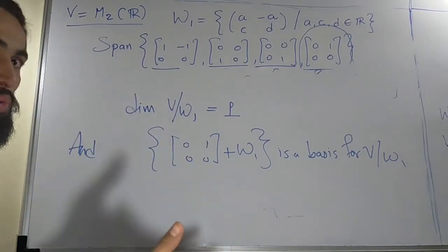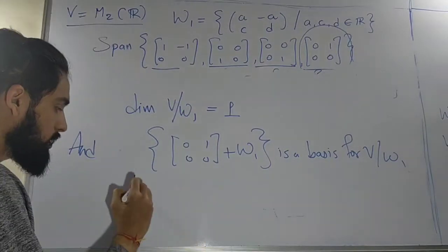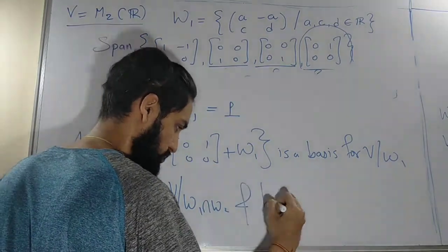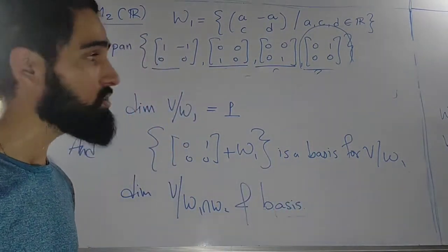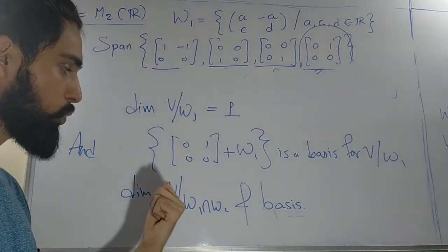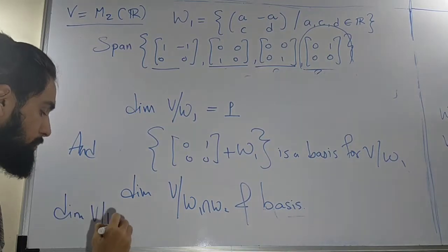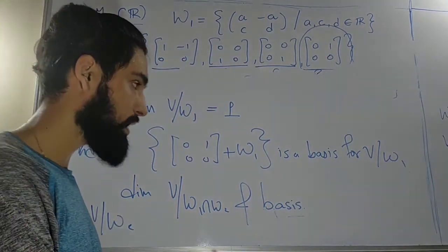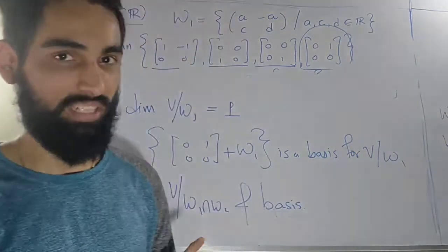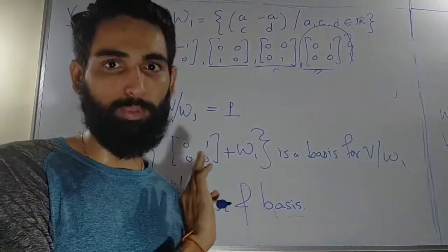This same approach works for W2 as well. I request students to find out the dimension and basis of V/W2, and also the dimension of V/(W1 ∩ W2) as an exercise. I want to do one more example, so I am giving those as exercises. Let's start a new example with the same vector space M2R but a different subspace.